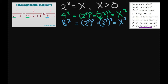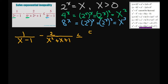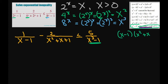From here, let's use substitution to make it a little easier. So we have 1 divided by (X minus 1) minus 2 divided by (X squared plus X plus 1), less than or equal to 5 divided by (X cubed minus 1). Now, before we continue, this X cubed minus 1 factors as X minus 1 times X squared plus X plus 1.